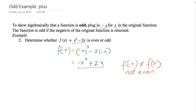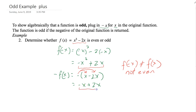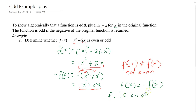Next, we check if it's odd by finding negative f of x. That's the negative of the original function: negative of x cubed minus 2x, which distributes to negative x cubed plus 2x. This matches our f of negative x, so f of negative x equals negative f of x — this is an odd function.